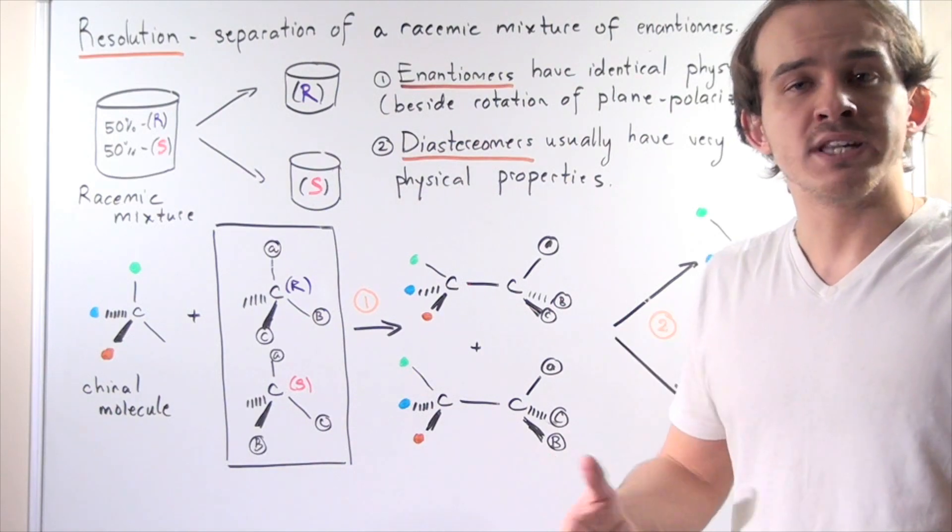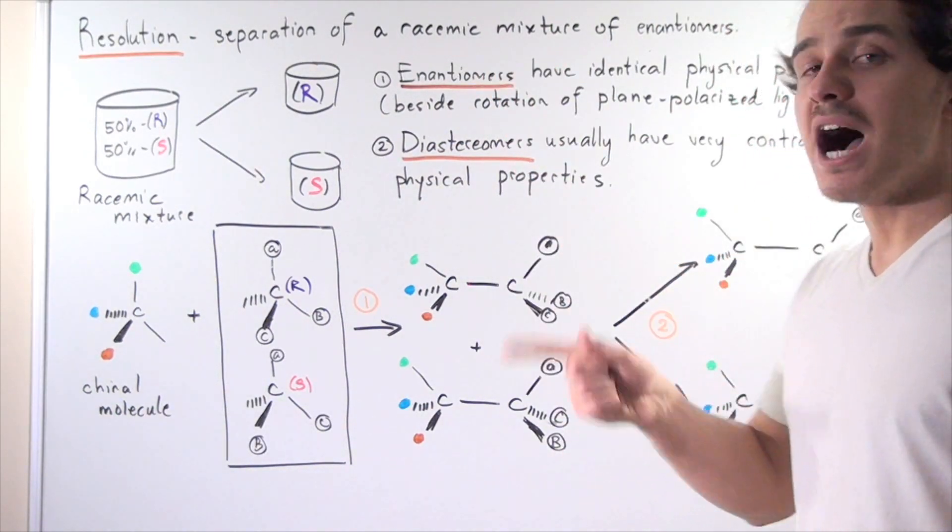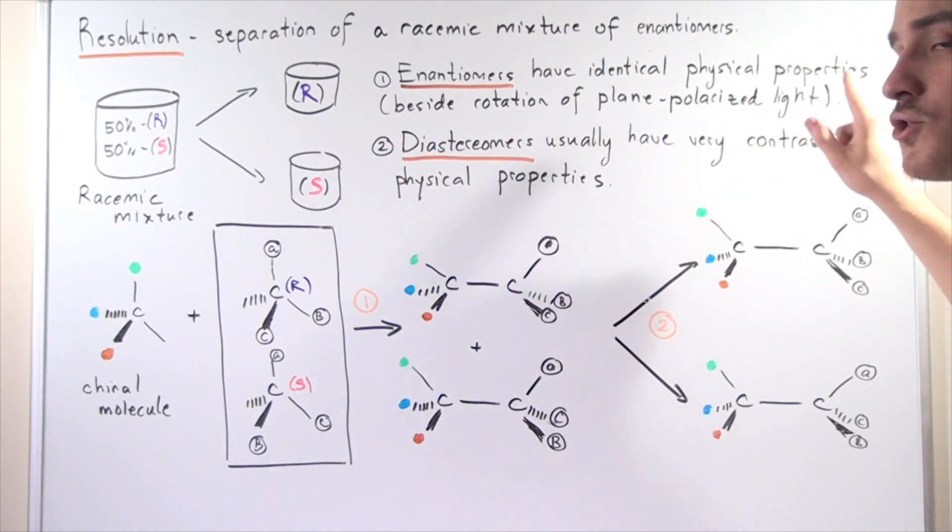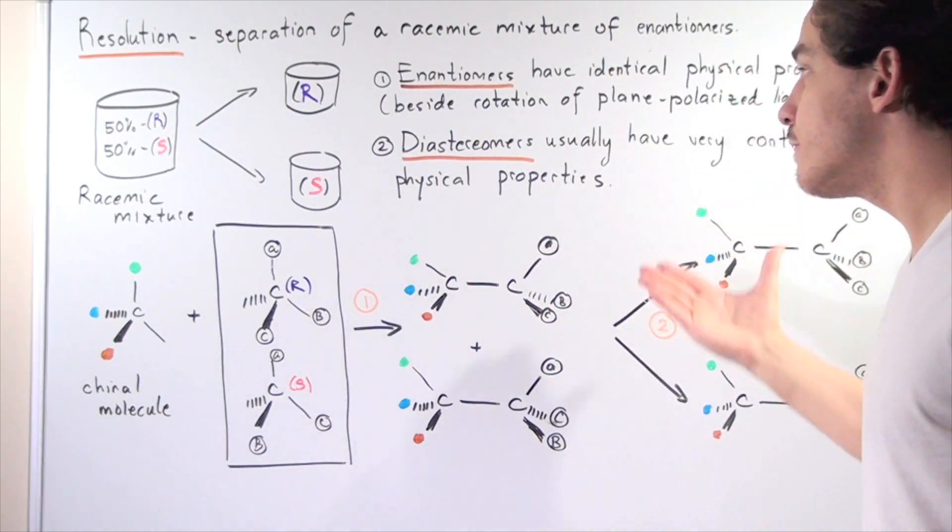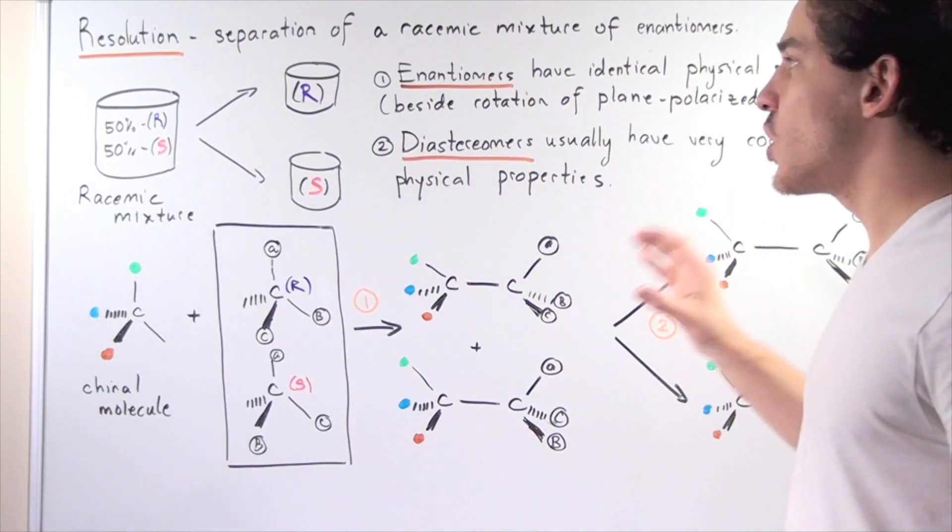Enantomers have identical physical properties. Properties such as boiling point and melting point are exactly the same for enantomers. On the contrary, diastereomers usually have very contrasting, very different physical properties. They differ in the boiling point or melting point of the compounds.